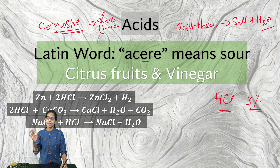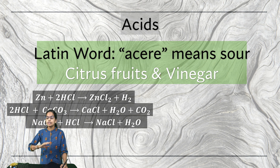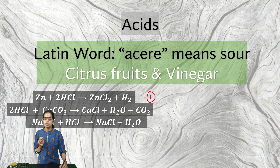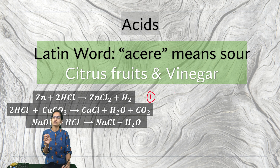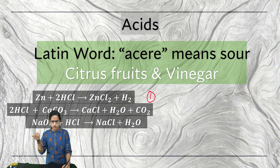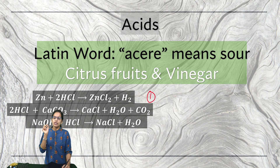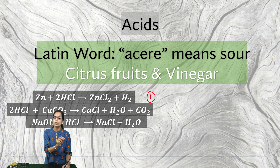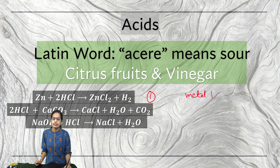Acid reacts with certain metals and carbonates in different fashions. The first example is when an acid reacts with a metal — I take the example of zinc. When zinc reacts with hydrogen chloride (HCl), zinc chloride and hydrogen gas are released. This is where metal reacts with acid, resulting in the formation of metal chloride.